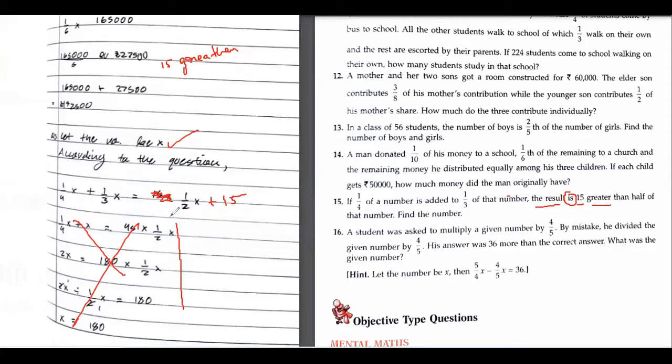One second, one second, step by step. What is the LCM you are taking? 12. LCM 12, very good. 3 upon 12x plus 4 upon 12x. 3x plus 4x.